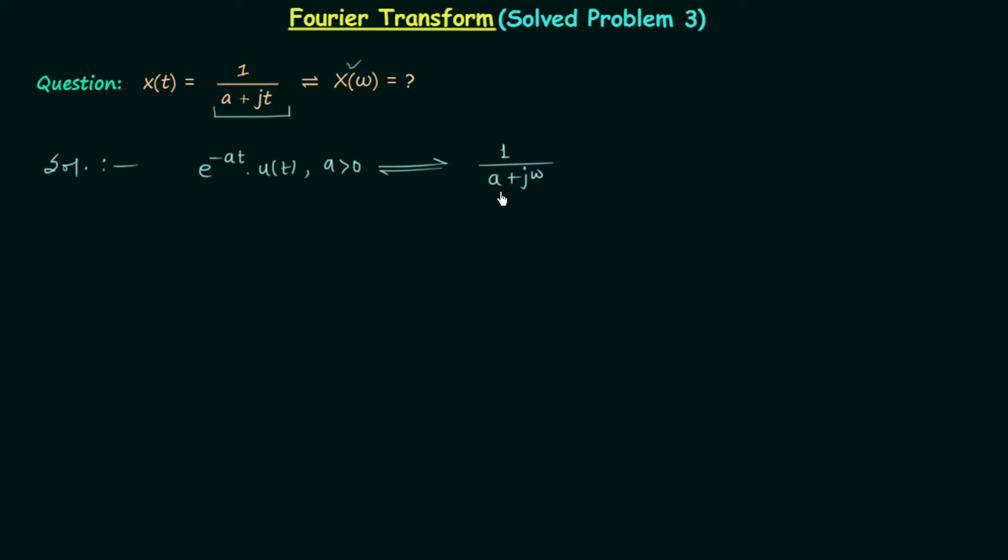Now compare this Fourier transform and the time domain signal. You will find there is one difference. In place of t we are having ω. So we will replace ω by t and we will have 1 over a plus jt.